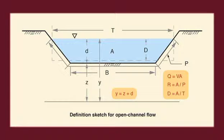Additional variables include: Flow depth d; Channel bottom elevation Z; Water surface elevation, or stage, Y = Z + d. In prismatic channels, Y is often used to refer to flow depth when it cannot be confused with stage.